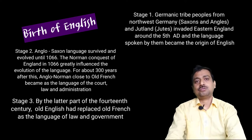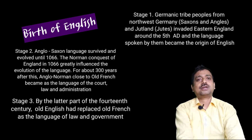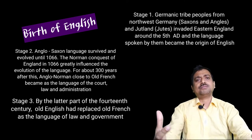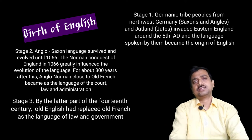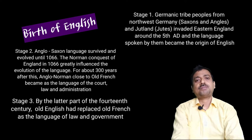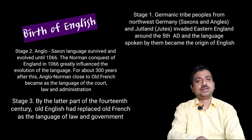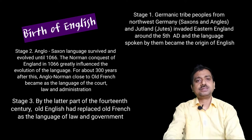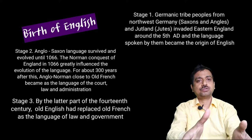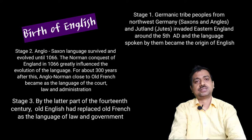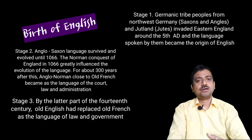In stage two, Old English — the Anglo-Saxon language — survived and evolved until the Normans conquered the island in 1066, popularly known as the Norman Conquest of England. This greatly influenced the evolution of the language, because for about 300 years thereafter the Normans used Anglo-Norman, which was close to Old French rather than Old English, as the language of the court, law, and administration. So French influence gradually appeared.